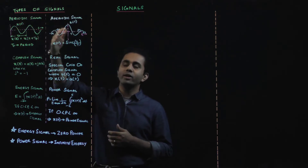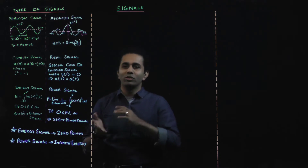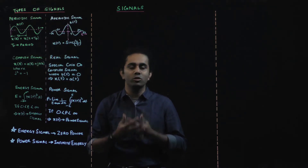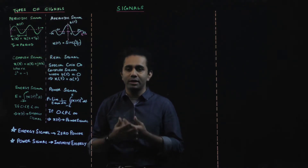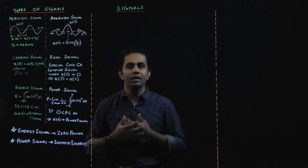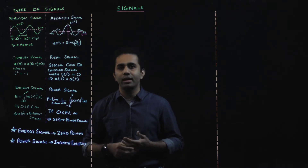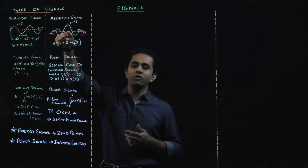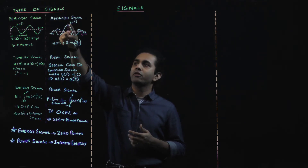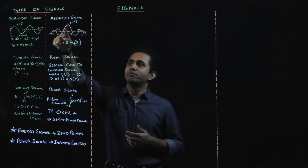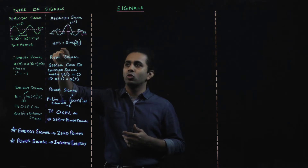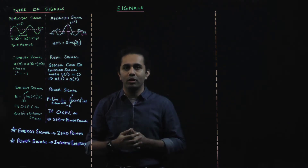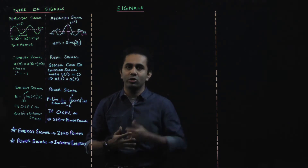Next we look at an aperiodic signal. If there is no time period Tp after which the waveform repeats, we can say that it is an aperiodic signal. If you notice this waveform, you actually have a decaying sinusoid. This function is called a sinc function, which we will look at later on.